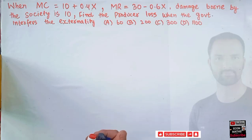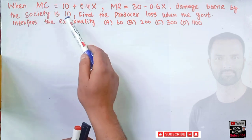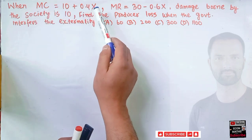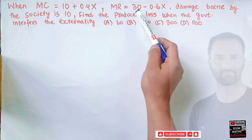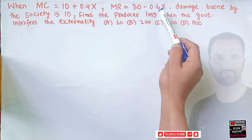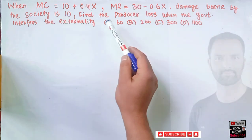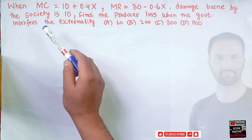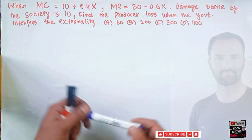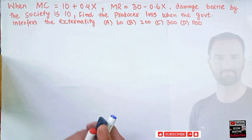In this video we will solve a problem asked on the Telegram channel. The question is: when marginal cost is given by 10 + 0.4x, where x denotes the output, marginal revenue is given as 30 − 0.6x, and damage borne by the society is 10, find the producer's loss when the government interferes with the externality.